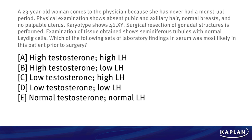Was it A: high testosterone and a high LH? B: high testosterone and a low LH? C: low testosterone and a high LH? D: low testosterone and a low LH? Or E: normal testosterone and a normal LH?